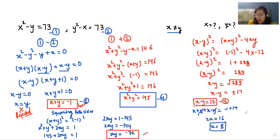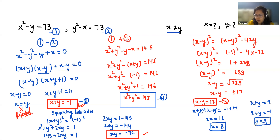Now to find the value of y: x plus y equals minus 1, so 8 plus y equals minus 1, and y equals minus 9. So these are the two values: x equals 8 and y equals minus 9. I hope it's clear. Please like and subscribe to my channel. Stay tuned.